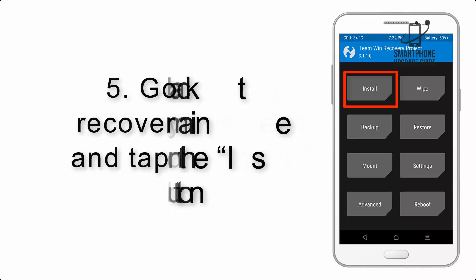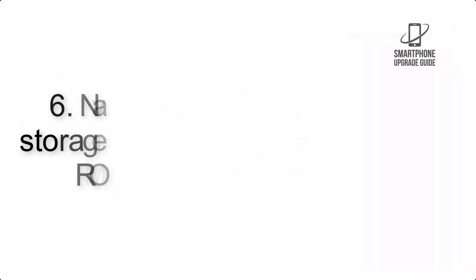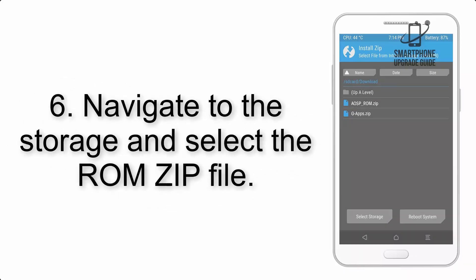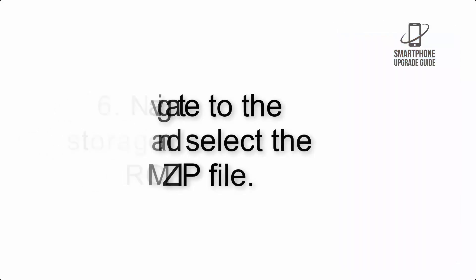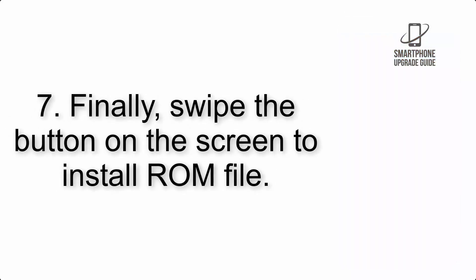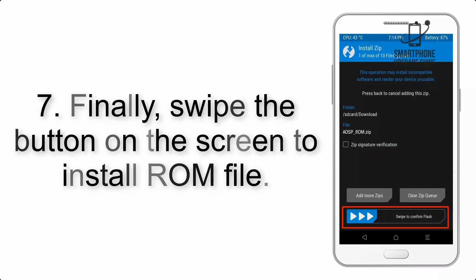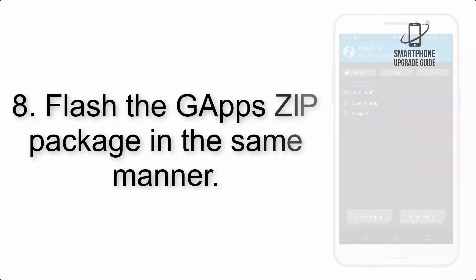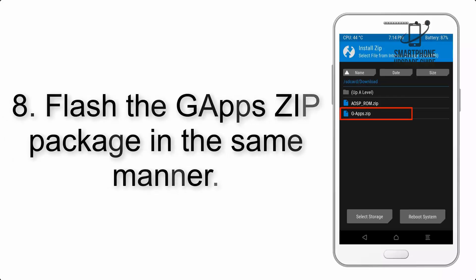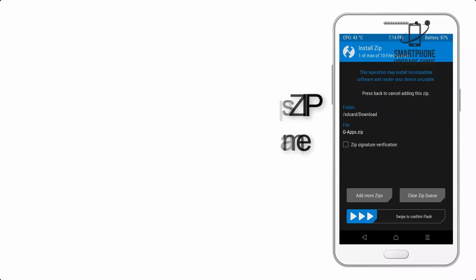Step 5: Go back to the recovery main screen and tap on the Install button. Step 6: Navigate to the storage and select the ROM zip file. Step 7: Swipe the button on the screen to install the ROM file.